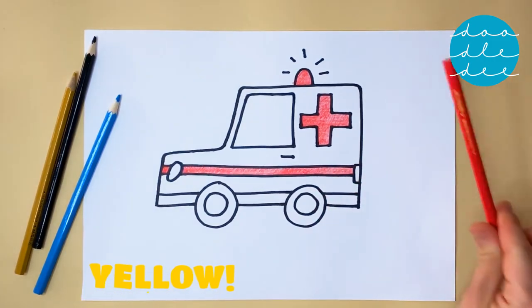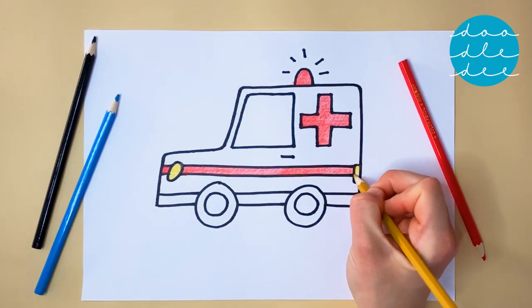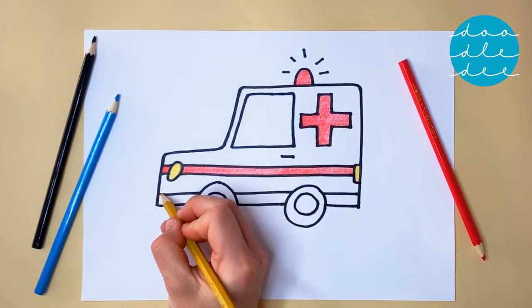The next color is yellow. Yellow for the lights at the front and back. And yellow for the stripe on the bottom.